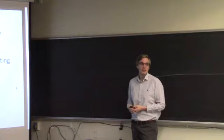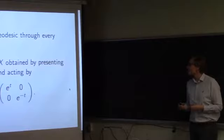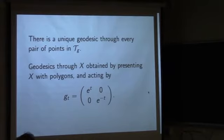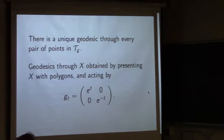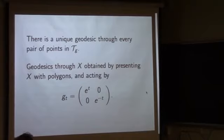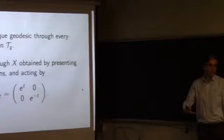What's more wonderful is that I can actually tell you what the geodesics are — which is rare in nature. You can get all the geodesics through a point x by presenting x using polygons, and acting on those polygons by the one-parameter family of matrices eᵗ, 0, 0, e⁻ᵗ, stretching out the polygons. That gives a one-parameter family of Riemann surfaces, which is the most efficient way of getting from one to the other. For each quadratic differential on x there's a polygonal presentation, so that's how you get all the different geodesics through x by varying the quadratic differential.